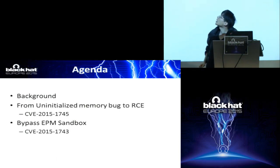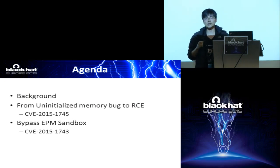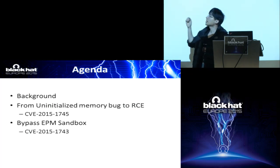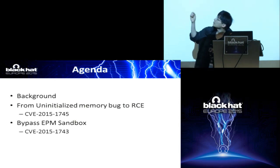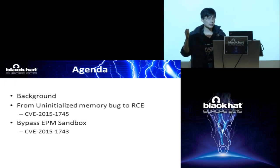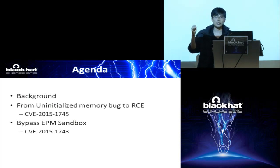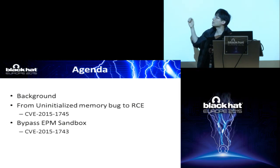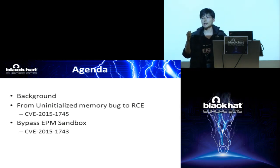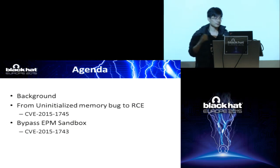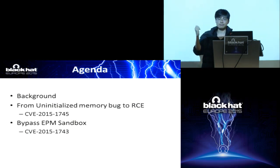This is our agenda today. We have two parts, since we used two zero-day vulnerabilities in the contest. The first part we will introduce the first zero-day, which is CVE-2015-1745 — an uninitialized memory bug — which we used to achieve remote code execution in the IE sandbox process. The second part introduces another zero-day we used to bypass the Enhanced Protected Mode of Internet Explorer. This is a race condition bug that exists in the IE broker service.